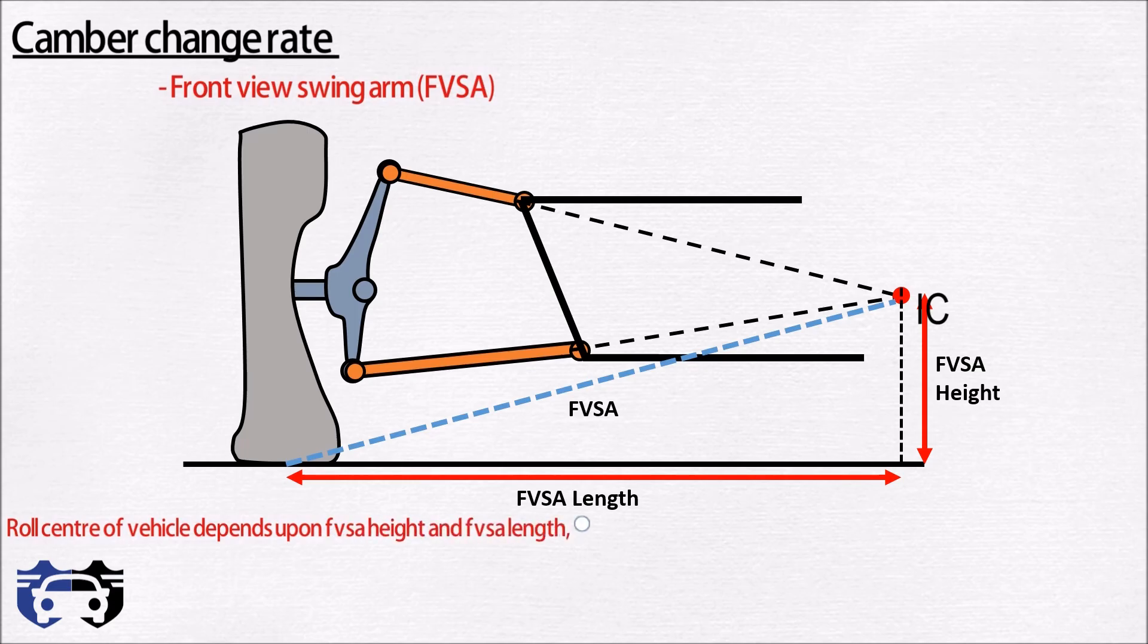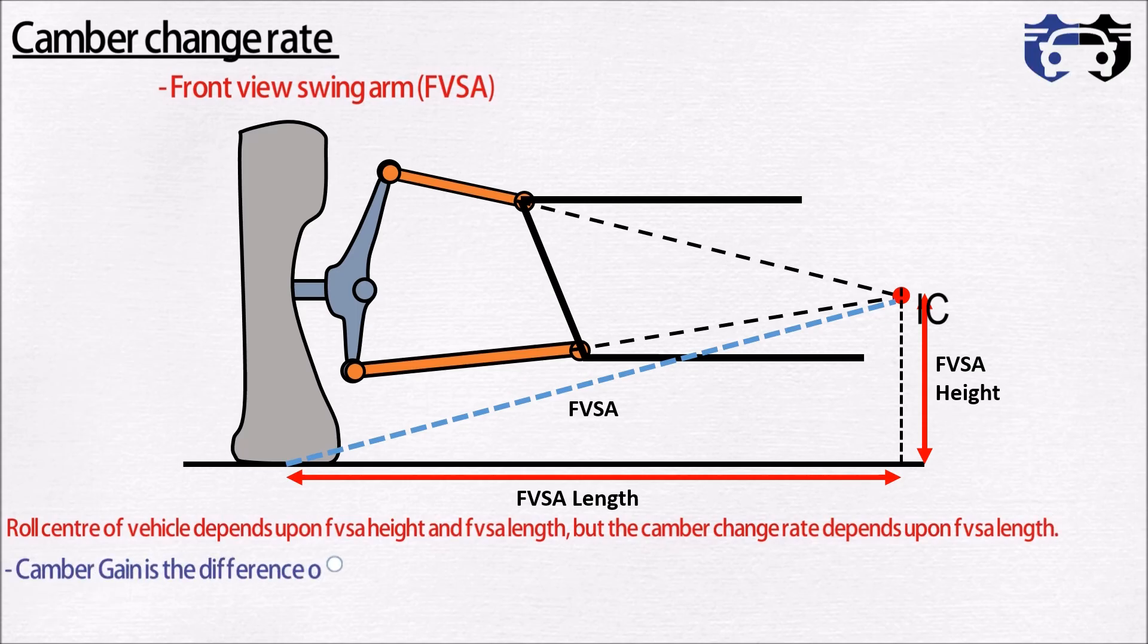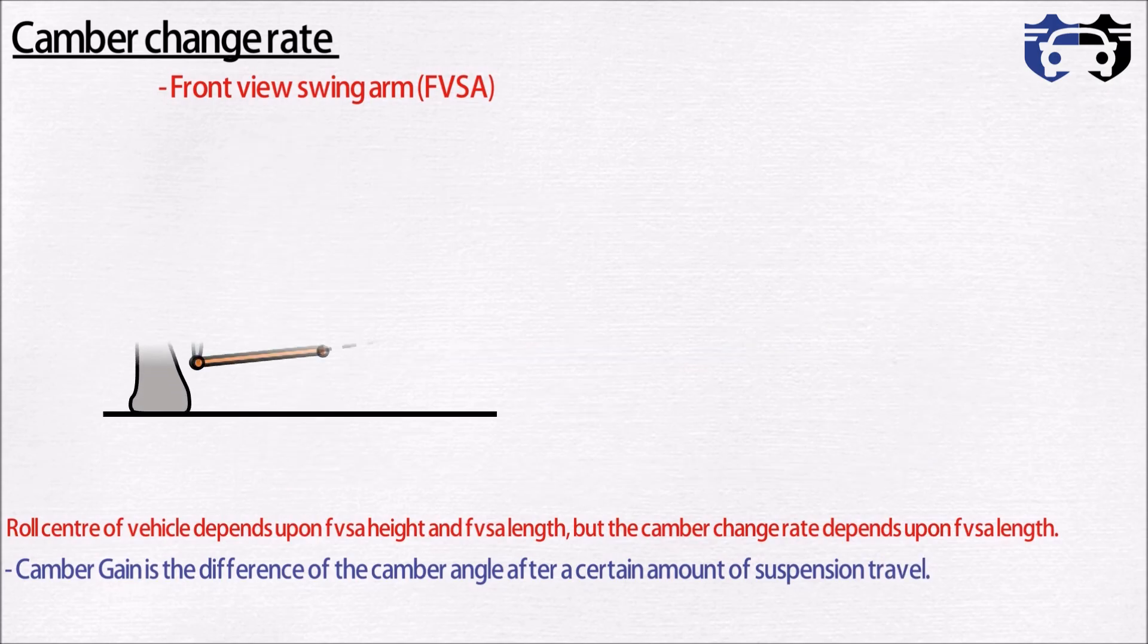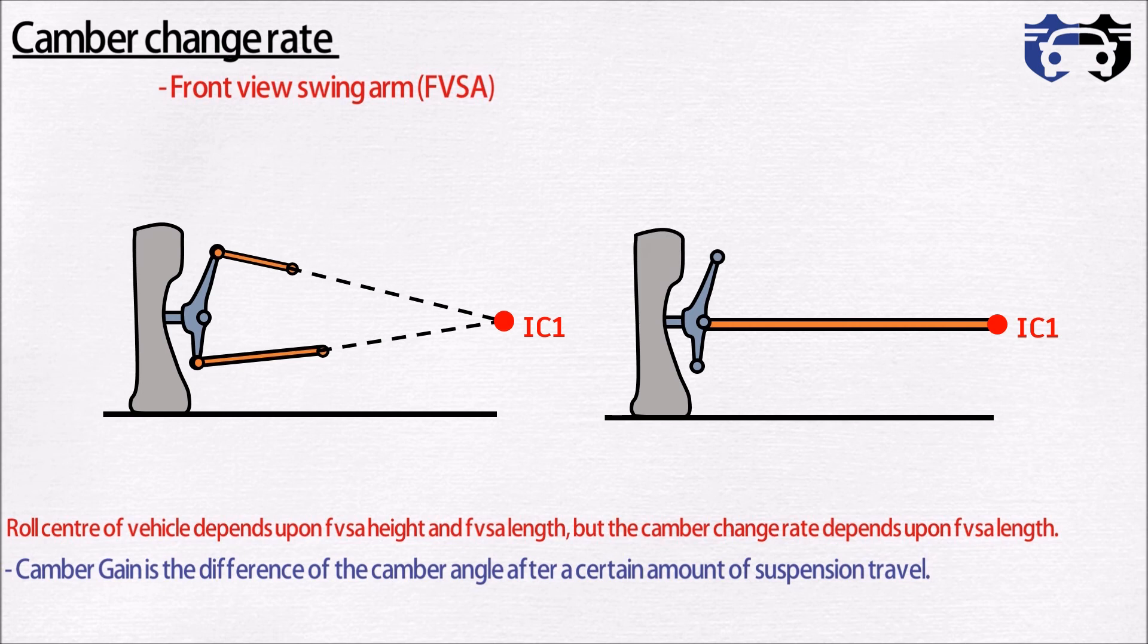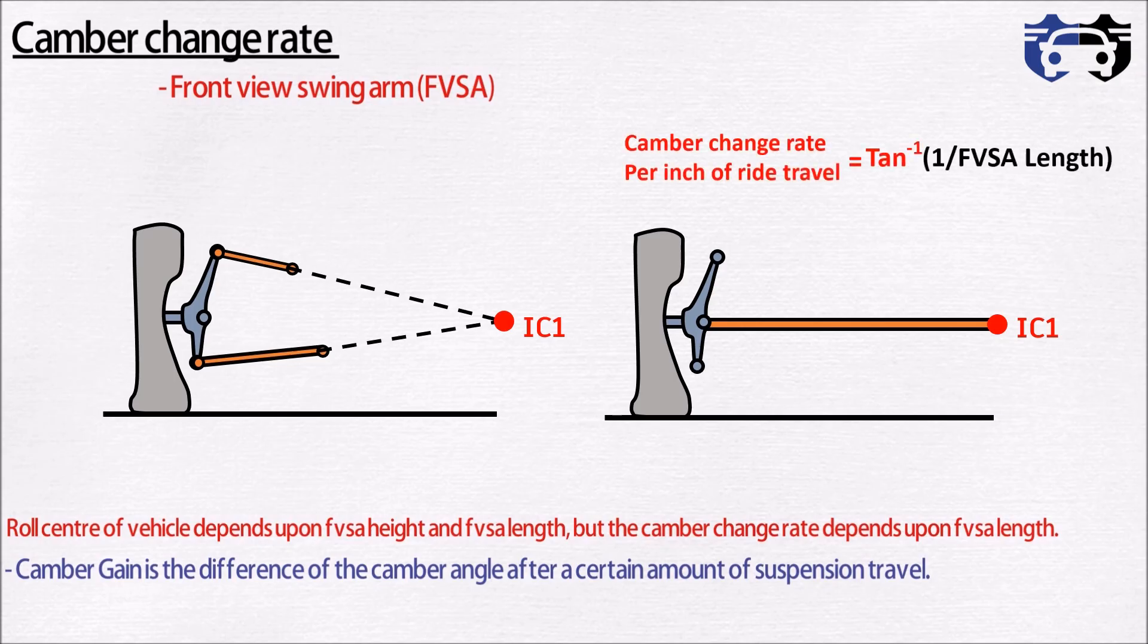But the camber change rate depends only upon the FVSA length. Basically camber gain is the difference of camber angle after certain amount of suspension travel. If you replace the control arms of suspension with a single link that ran from the knuckle to the instant center, the amount of camber change achieved per inch of ride travel will be given by tan inverse of 1 divided by FVSA length. So if FVSA length is short there will be large camber change rate, and if FVSA length is long then there will be small camber change rate.